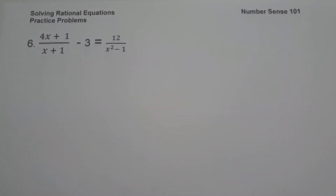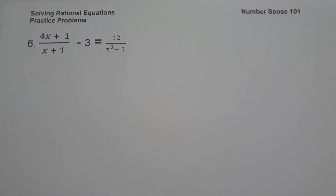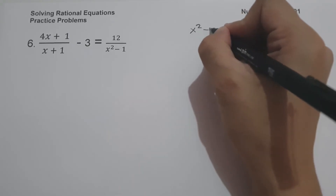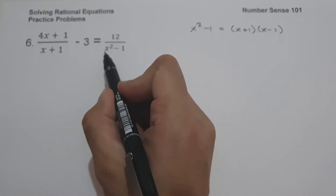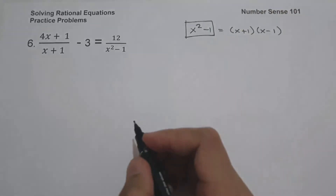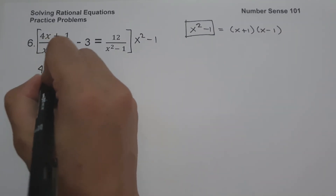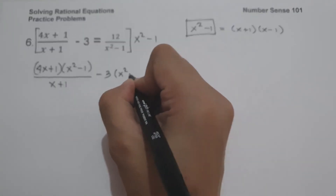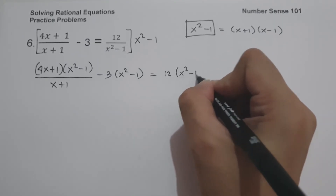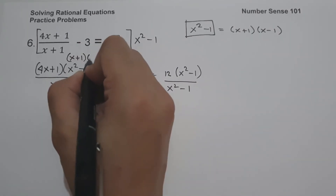In example number 6, we have 4x plus 1 all over x plus 1, minus 3, equals 12 over x squared minus 1. To find the LCM of x plus 1 and x squared minus 1, we recall that x squared minus 1 equals x plus 1 times x minus 1. Therefore, the LCM of x plus 1 and x squared minus 1 is x squared minus 1. So let us multiply the whole equation by x squared minus 1. We have 4x plus 1 times x squared minus 1 over x plus 1, minus 3 times x squared minus 1, equals 12 times x squared minus 1 over x squared minus 1.